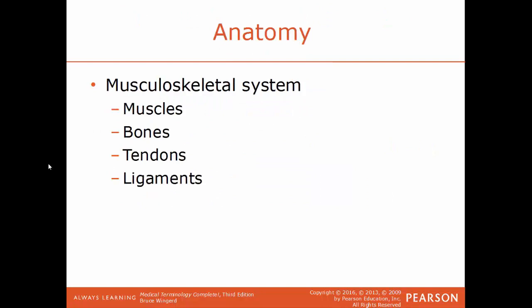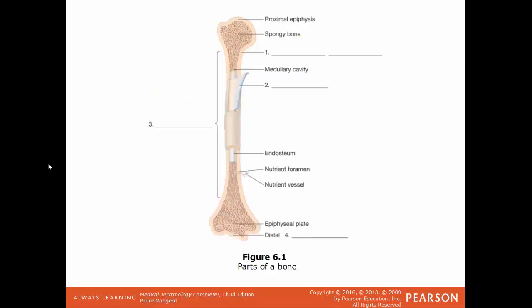For the anatomy of the musculoskeletal system, muscles come with tendons and ligaments — two separate structures. For the skeletal portion, there are bones. A long bone, like the humerus of the upper arm, has ends called epiphyses, a shaft called the diaphysis, and a hollow chamber in the middle where bone marrow is found and blood cells are created.